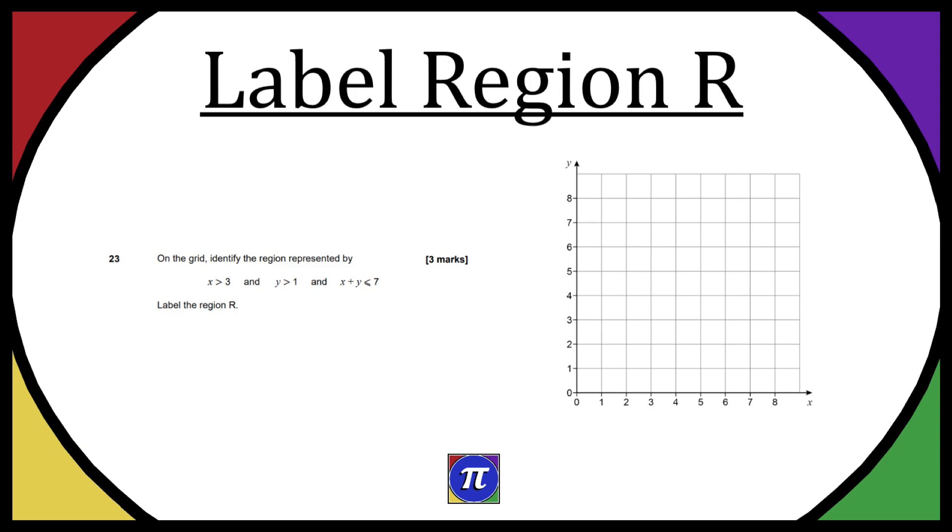So question 23, on the grid, identify the region represented by x being larger than 3, y being larger than 1, and x plus y being less than or equal to 7. Label the region R. So basically we have to apply these three rules and then what is left should give us region R. Let's do one at a time.